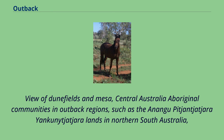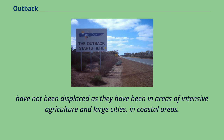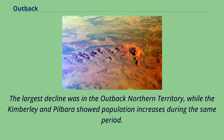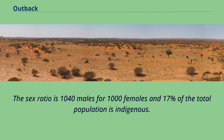Aboriginal communities and outback regions such as the Anangu Pitjantjatjara Yankunytjatjara lands in northern South Australia have not been displaced as they have been in areas of intensive agriculture and large cities in coastal areas. The total population of the outback in Australia declined from 700,000 in 1996 to 690,000 in 2006. The largest decline was in the outback Northern Territory, while the Kimberley and Pilbara showed population increases during the same period. The sex ratio is 1,040 males for 1,000 females and 17% of the total population is Indigenous.